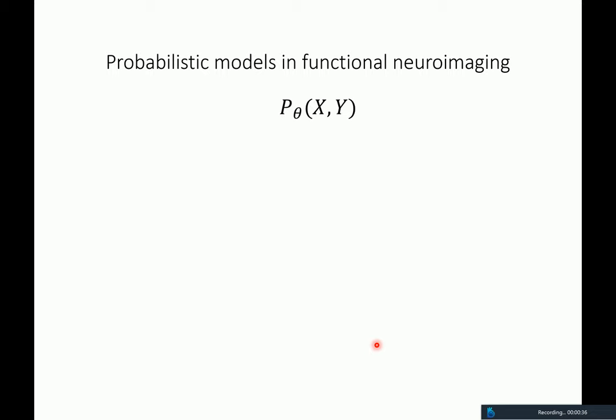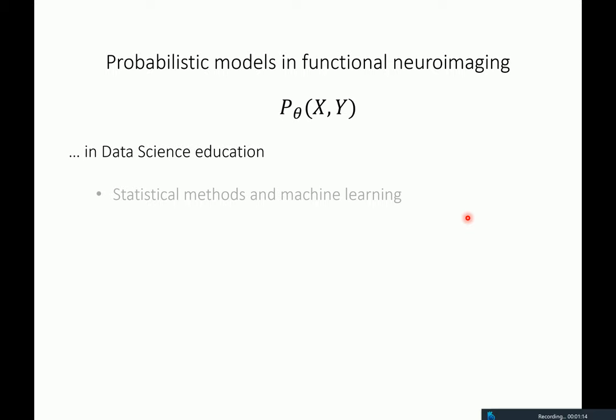What do I mean by probabilistic models? I just mean joint distributions over potentially very many random variables, some of which may be observed and modeling data, and some of which may not be observed and modeling latent states — for example, in the brain or parameters in biophysical models of neuroimaging data. This form of joint distributions over many random variables is involved in all of my academic activities, specifically over three levels.